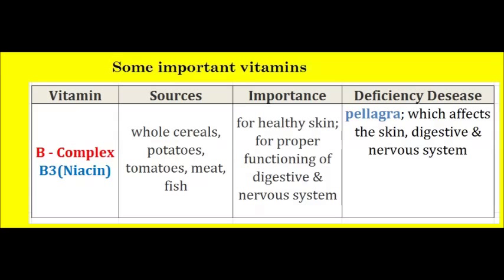Vitamin B3. Sources of Vitamin B3 are whole cereals, potatoes, tomatoes, meat, and fish. The importance of Vitamin B3 is for healthy skin and for the proper functioning of the digestive and nervous system. Deficiency disease due to lack of Vitamin B3 is pellagra, which affects the skin, digestive, and nervous system.